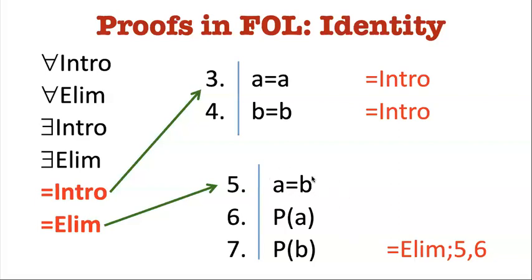Identity ELIM, that's how you use a symbol when you already have an identity sentence. How do you use it? Well, let's say we know, for example, that A and B are two names for the same object. A equals B.